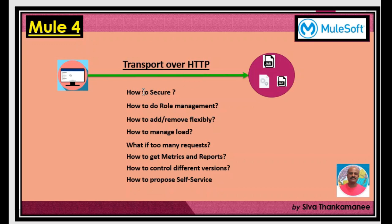There are four terms to understand: API, web service, website, and modern APIs. A website is a communication between a user and a system, while API and modern APIs deal with system-to-system communications enabled over the network.